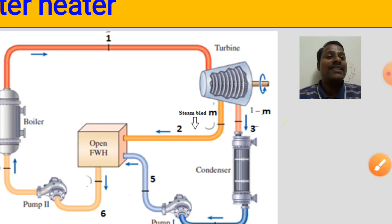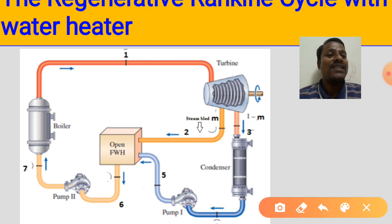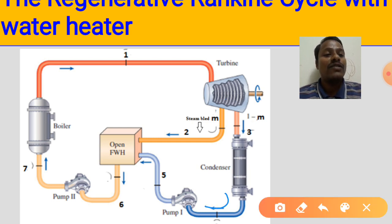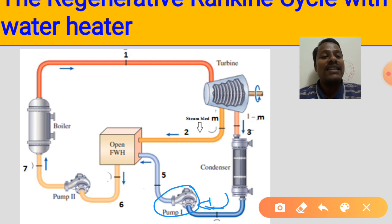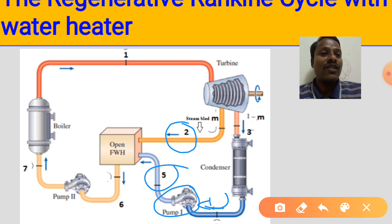After bleeding at state 2, the remaining steam undergoes further expansion and comes out of the turbine at state 3, then enters the condenser where it rejects heat energy. The condensate from the condenser enters pump 1, which pumps the condensate at state 5 into the feed water heater against the pressure at state 2 — since the bled steam pressure is higher, pump 1 must work against that pressure.